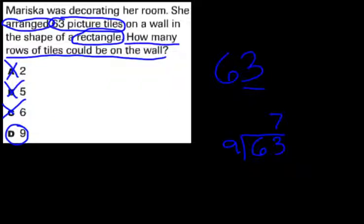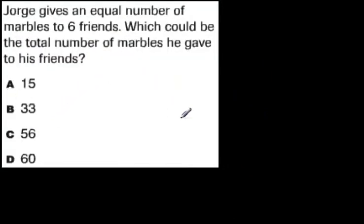Let's try another example. Remember, try divisibility rules first. Jorge gives an equal number of marbles to 6 friends. This is a key here. Equal number - he's giving an equal number, he's sharing, he's dividing. That is a clue for division. And he's giving marbles to 6 friends. The number of friends is important.